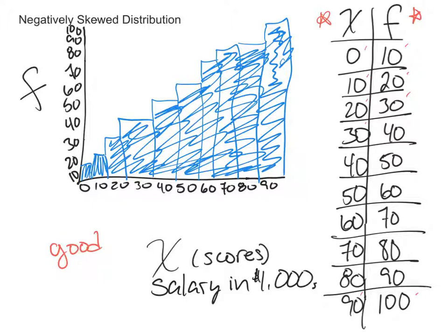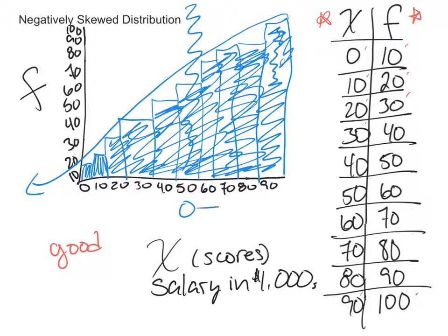This is a negatively skewed distribution, because if you draw a line at the very top and slide it down, the arrow is pointing to the negative side of the number line. Keep in mind that if this is our midpoint of the graph, numbers on the number line go more positive this way — 1, 2, 3, 4 — and on this side it goes more negative: negative 1, negative 2, negative 3. If the arrow of the tail is pointing to the left towards the negative side of the number line, you would say it's a negatively skewed distribution.